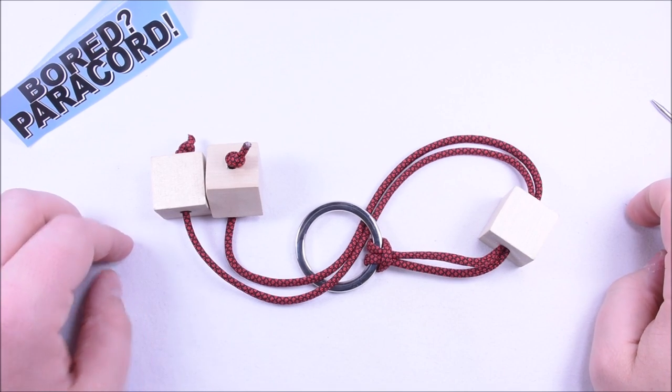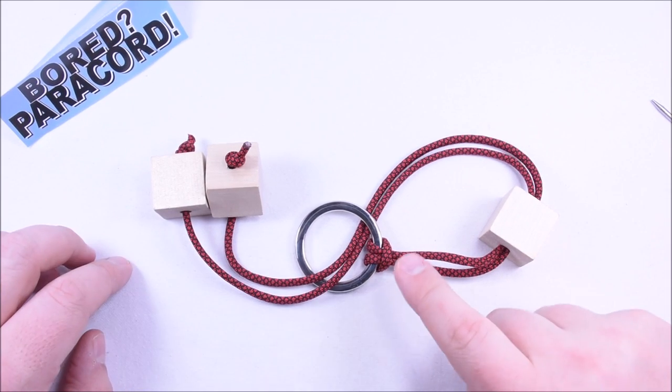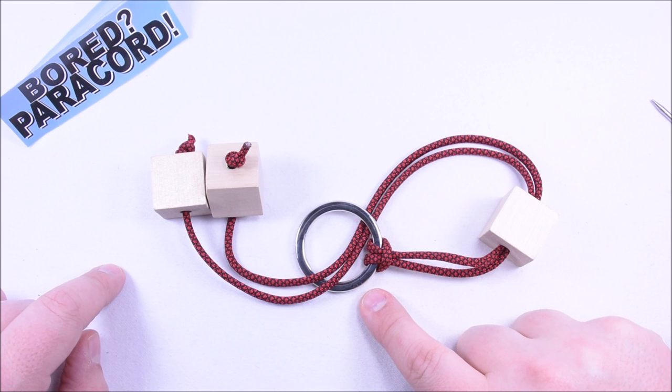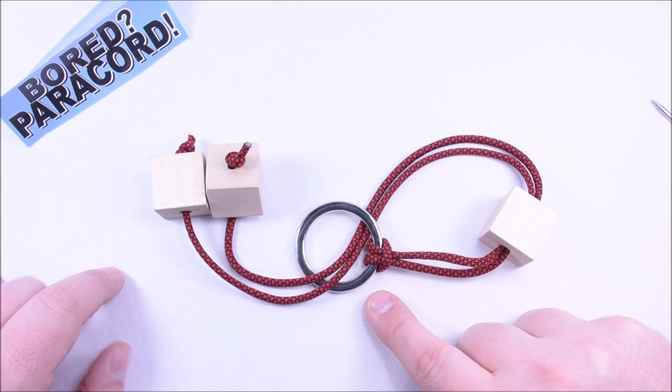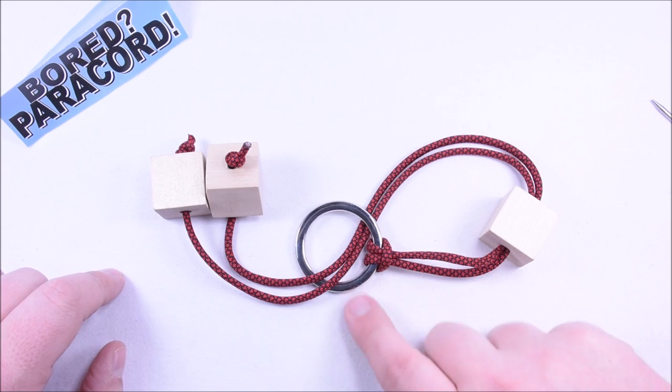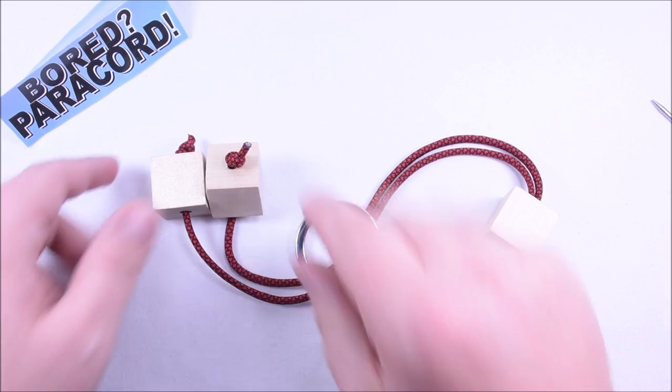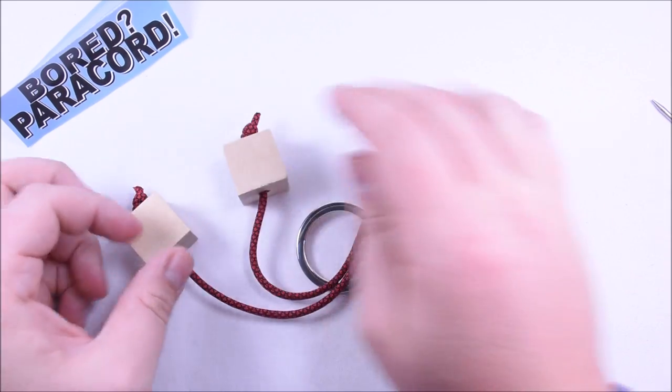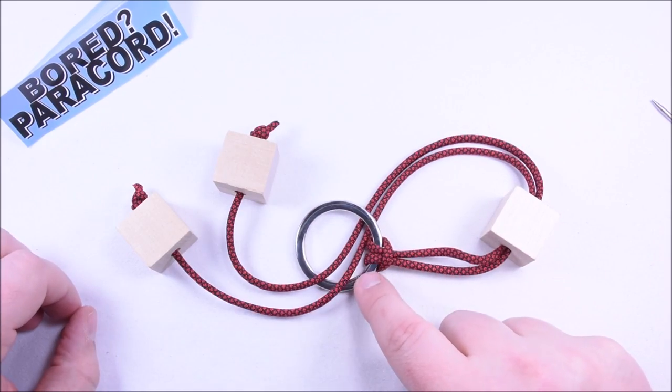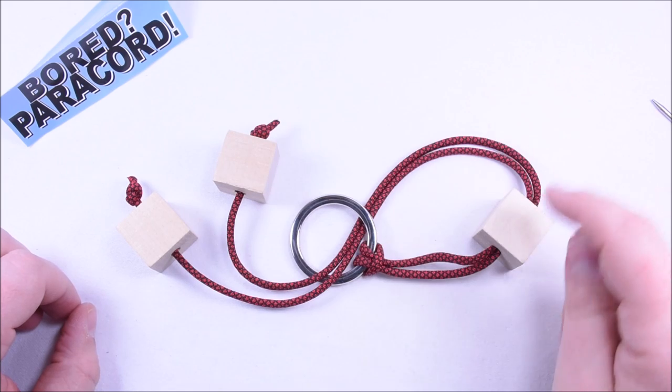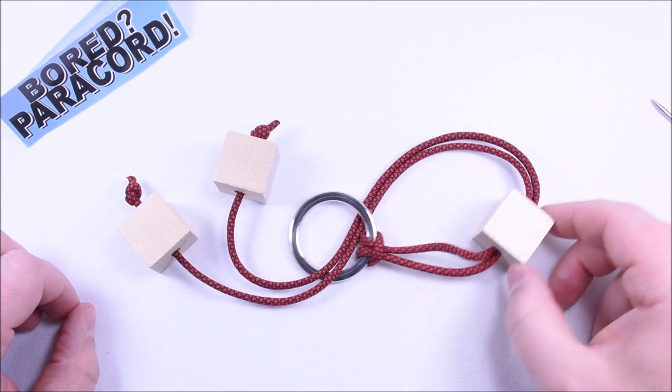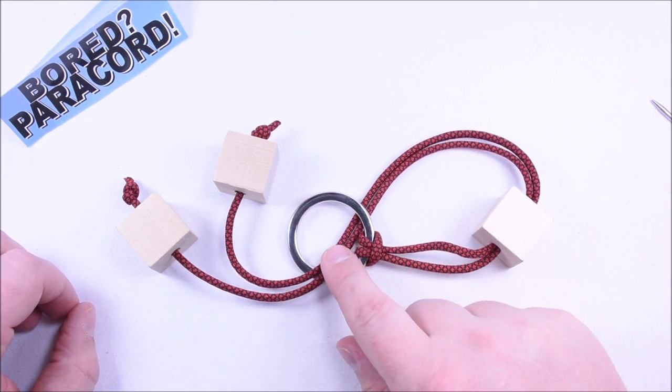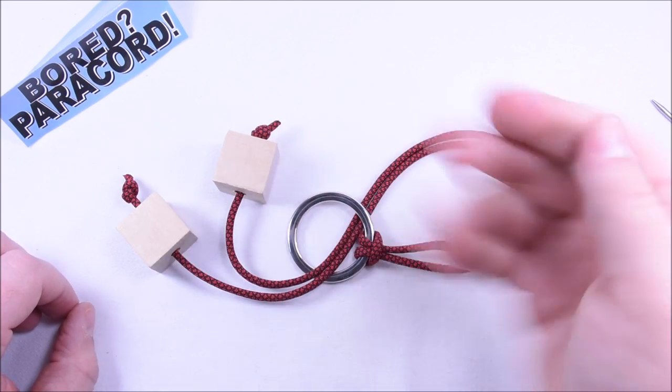Hey everybody, Sean here from Bored Paracord. Today we're going to learn how to make this paracord puzzle. Basically, the way that you solve this is without untying these two knots here at the end, you need to remove this metal ring and this block or bead from the paracord so that they're just individually sitting there.